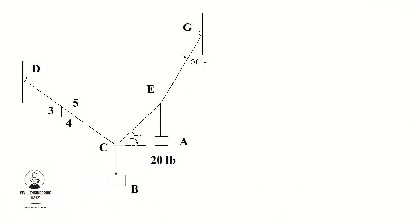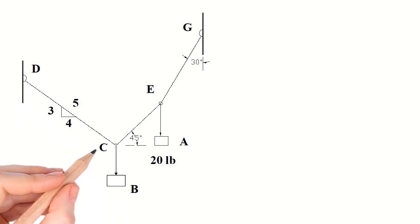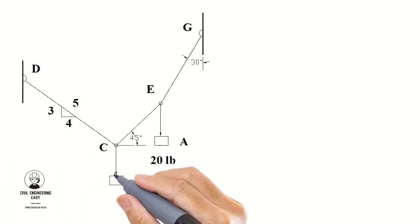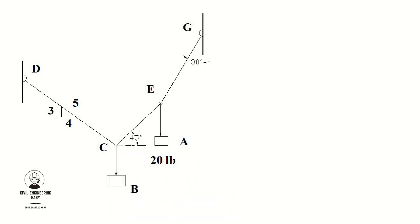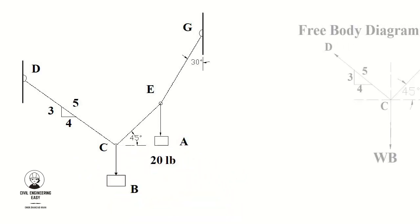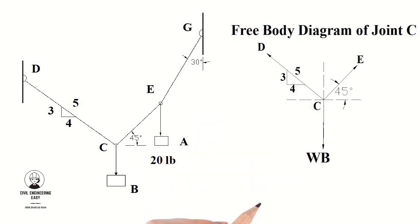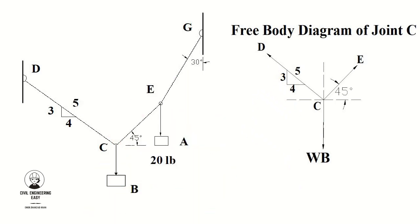In order to find out weight B and the force in chord CD, we will draw a free body diagram of joint C. At joint C, one unknown weight is attached whose magnitude we need to find. One force FEC acts at 45 degrees with the horizontal, and another force FCD acts at an angle based on the given 3-4-5 triangle.